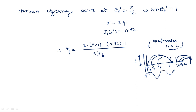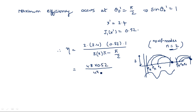Substituting n = 2: η = 2 × 2nπ − π/2 = 4π − π/2. So η = (4.8 × 0.52) / (4π − π/2). Simplifying, this equals 0.227, so eta = 0.227.